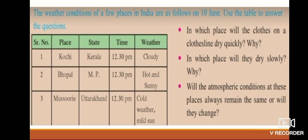In which place will the clothes on a clothesline dry quickly, and why? Clothes will dry quickly at Bhopal because the weather is hot and sunny. In which places will clothes dry slowly? In Kochi and Mussoorie — in Kochi the weather is cloudy, and in Mussoorie the climate is cold as it is a mountainous region. Thus, clothes will take more time to dry in both these places.